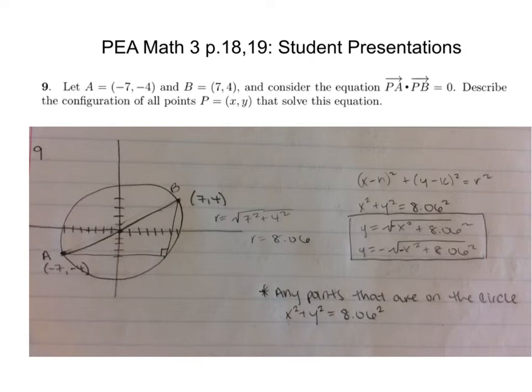Let A = (-7, -4) and B = (7, 4), and consider the equation PA dot PB equals 0. Describe the configuration of all points P(x, y) that solve this equation. So we put A and B as the diameter of a circle. All points that would be perpendicular would be on this circle, because of the right angle, 90 degree angle they make. We found the equation of this circle. We found the radius from the origin to B, which is also square root 65. So we graphed that, and this is the equation.